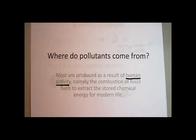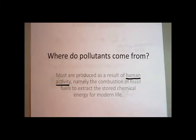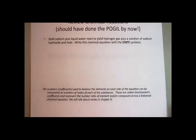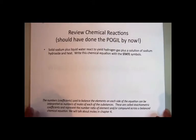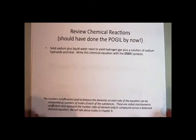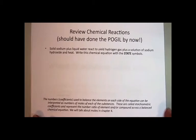What we're talking about is where pollutants come from. We recognize that they come from human activity, namely the combustion of fossil fuels. In the last segment we looked at what combustion means and examined some combustion reactions. We also reminded ourselves of the importance of balancing chemical reactions. By now you should have done the POGIL activity and practiced balancing these chemical reactions.